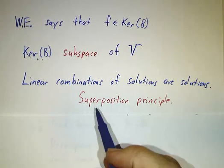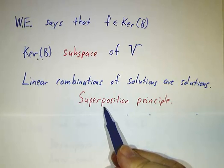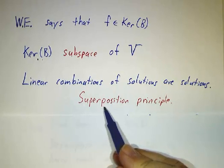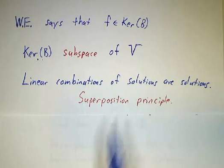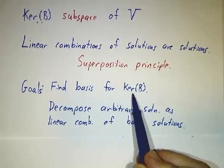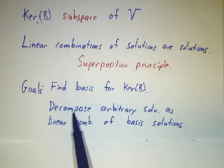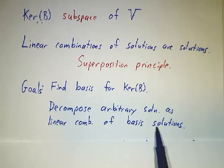You can take any two solutions to the wave equation and add them, and you get a new solution. You take a solution, you multiply it by seven, you get a new solution. The object of the game is then finding a basis for this kernel. And then we can decompose an arbitrary solution as a linear combination of these basis solutions.